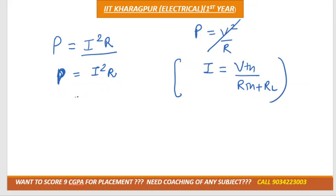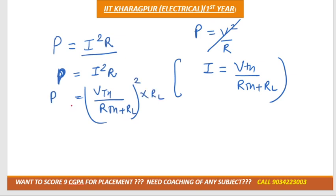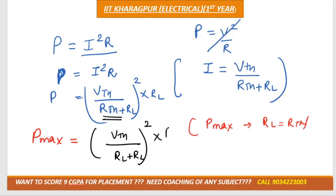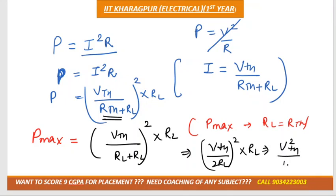We put I as VTH over (RTH + RL), the whole squared, multiplied by RL. Since the condition for maximum power transfer is RL = RTH, we substitute: VTH divided by (RL + RL), squared, multiplied by RL — which simplifies to VTH divided by 2RL, squared, times RL.